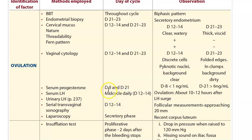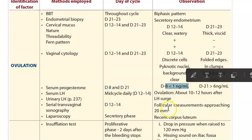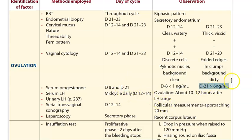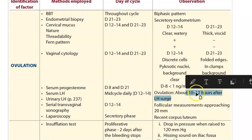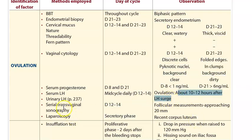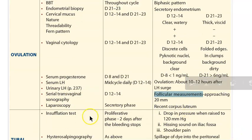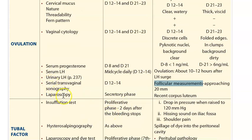For serum progesterone: on day 8 it should be less than 1 nanogram per ml, and after day 21 it should be greater than 6. Serum LH and urinary LH are also checked - the LH surge precedes ovulation, which occurs about 10 to 12 hours after the LH surge. Transvaginal sonography is used to check how large the follicles are before they release the egg.